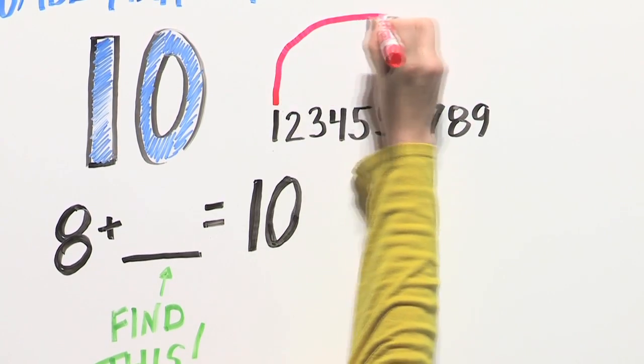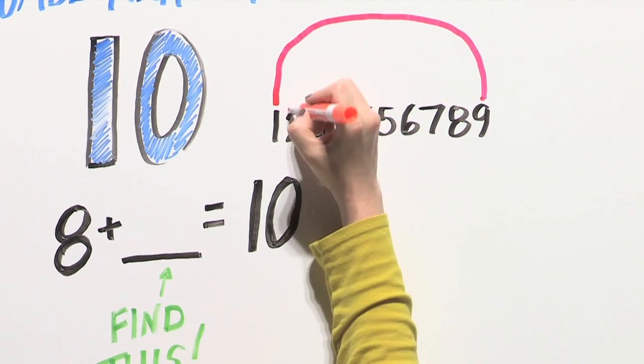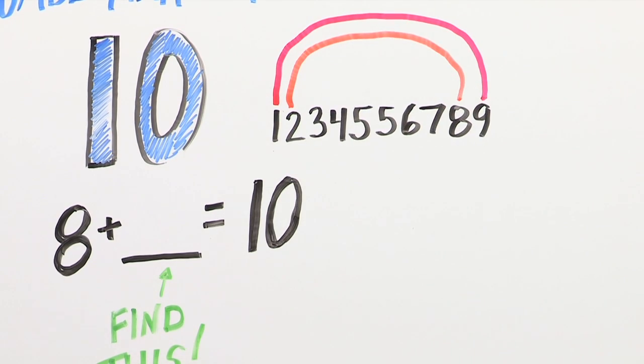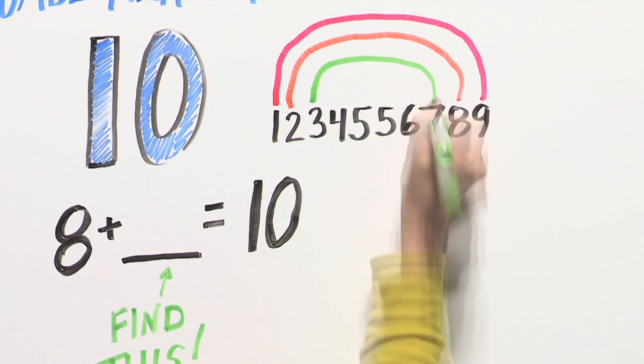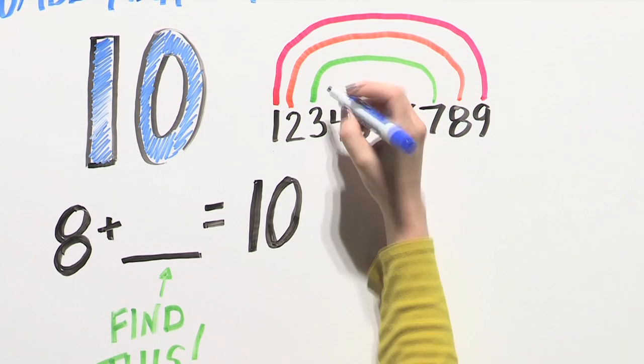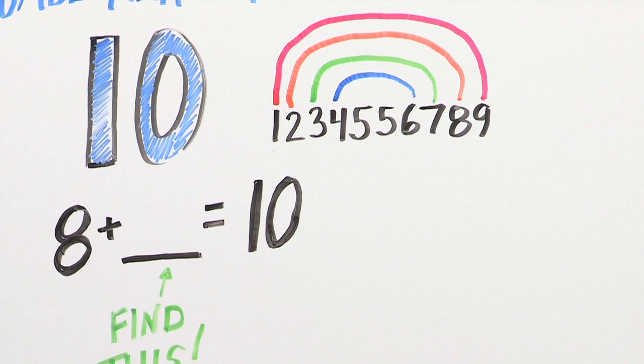1 plus 9 equals 10. 2 plus 8 equals 10. 3 plus 7 equals 10. 4 plus 6 equals 10. And 5 plus 5 equals 10.